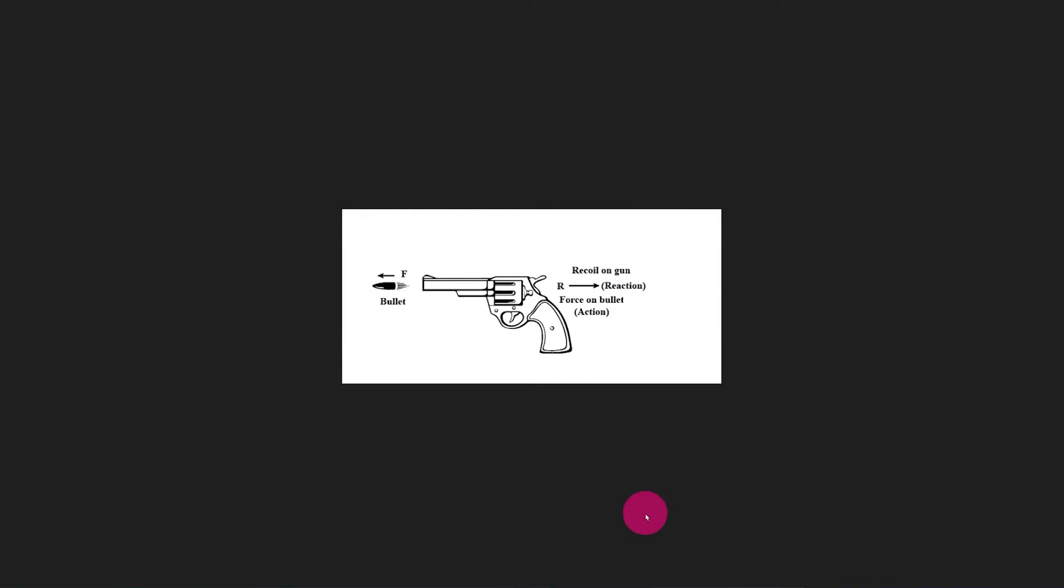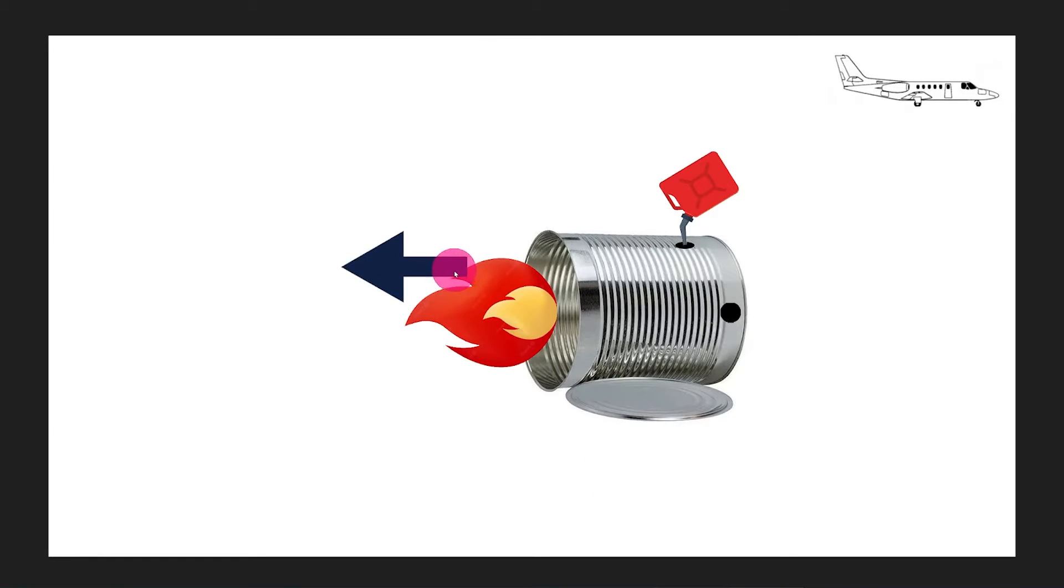This flame has mass and speed and it's shooting off to the left. Let's think of it for now as blowing wind out of the flame. So the whole can, our new engine, will want to move to the right. So here we have our most basic jet engine. Let's continue step by step.